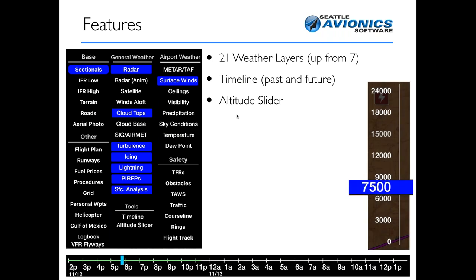The altitude slider is another incredibly important part. The altitude slider will let you, when doing pre-flight planning, see what the winds are like at different altitudes — but not just the winds. It will also affect many of the other weather layers, especially things like icing, turbulence, and cloud tops. So the altitude slider is going to be a very integral part of the features you see here today.